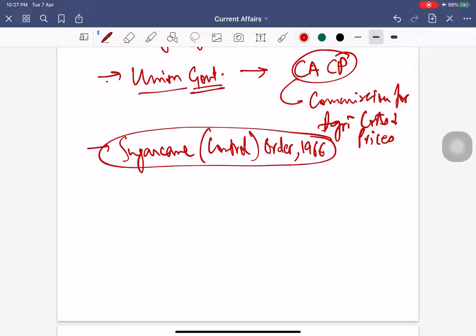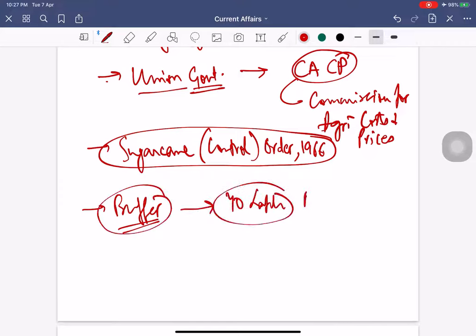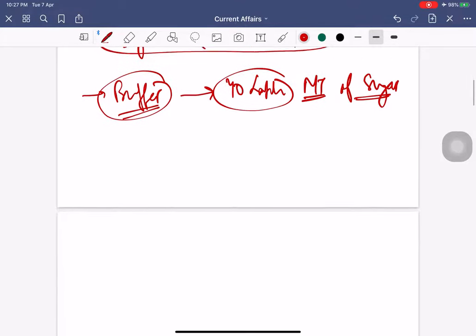Related to this is sugar buffer stock. The cabinet has also approved creation of a buffer stock of 40 lakh metric tons of sugar for one year from August 1, 2019 till July 31, 2020. It will lead to an improvement in the liquidity in the sugar inventories and stabilization of sugar prices.